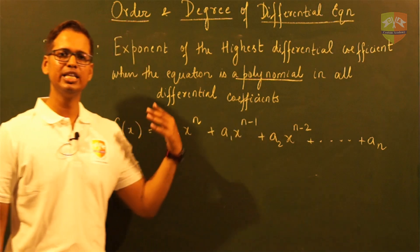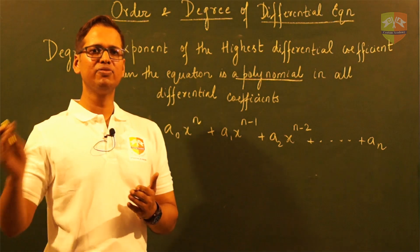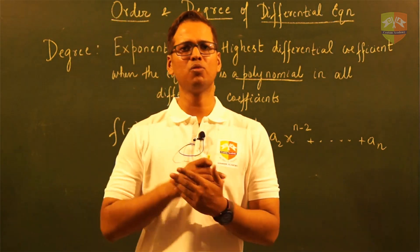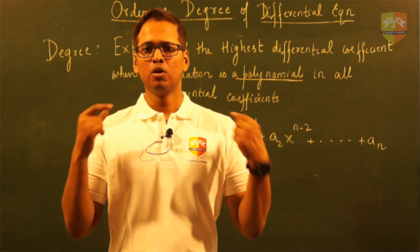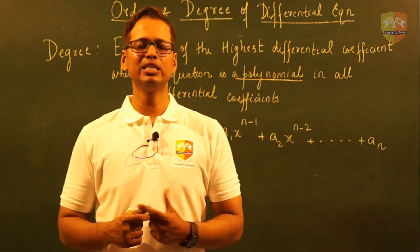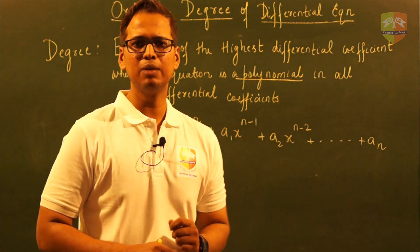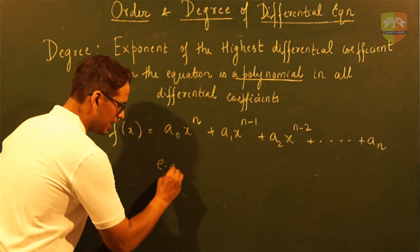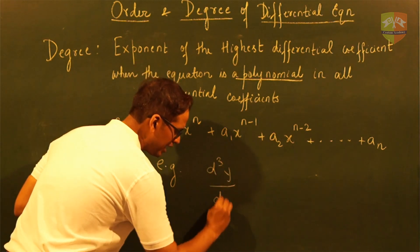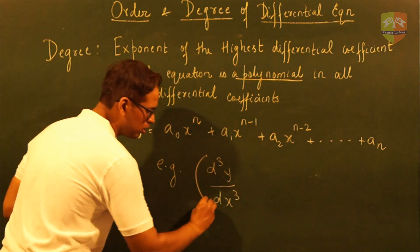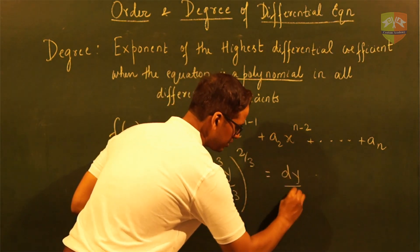In a similar way, when your differential equation has been expressed such that all the differential coefficients — no matter what order they are — have whole number powers, then only we can decide on the degree of the differential equation. Let me show you with an example. Let's say I have a differential equation like this: d³y by dx³ whole to the power of 2/3 equal to dy by dx plus 2.